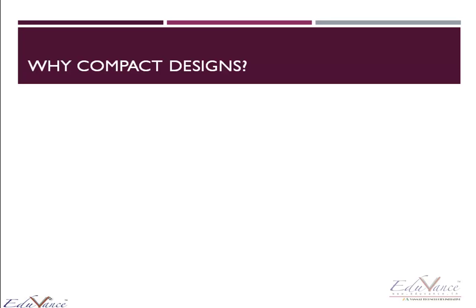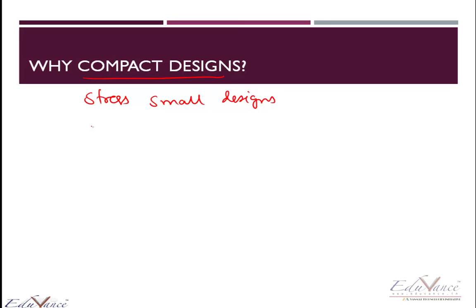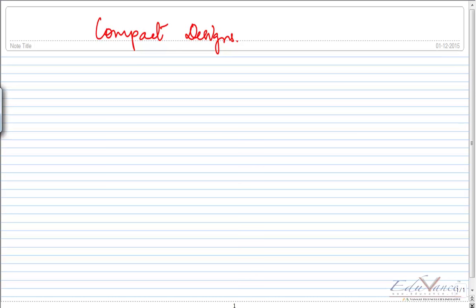Now first and the foremost question is why does the industry stress on compact designs? Or why do we really need compact designs? What led to the development of system on chip? Why does this industry stress on concepts like system on chip? Why do they want smaller ICs? We are discussing why is stress laid over compact designs or achieving compact designs for your circuit boards. The first and foremost reason for compact designs is the trade-off between area, power and cost.